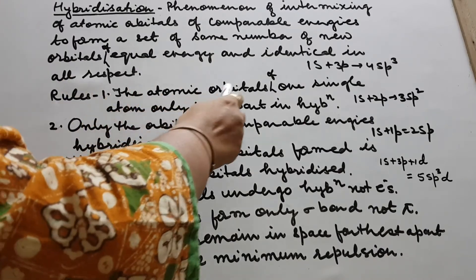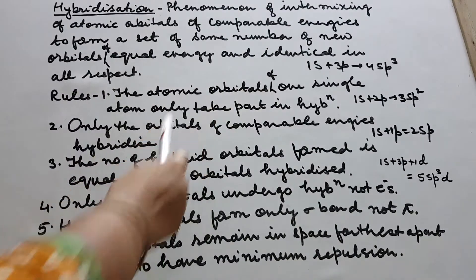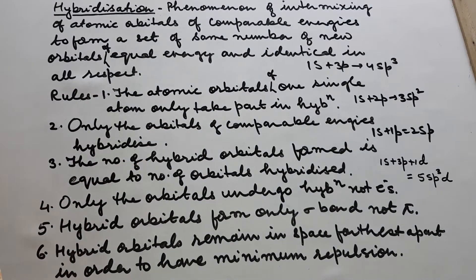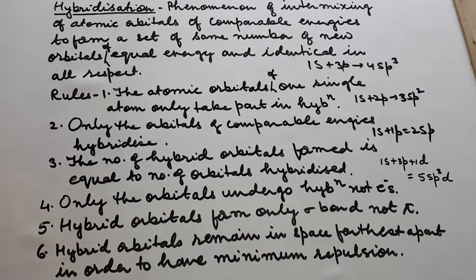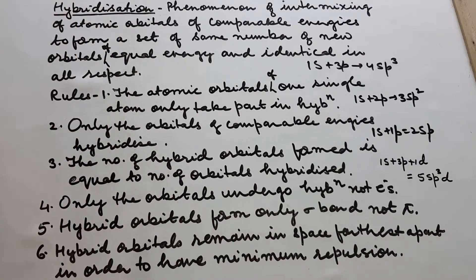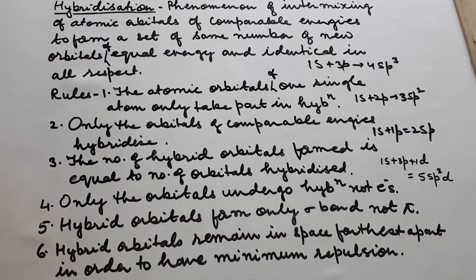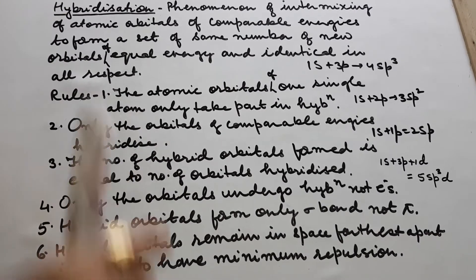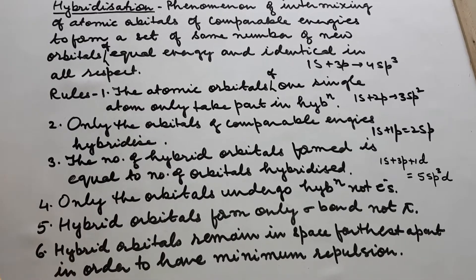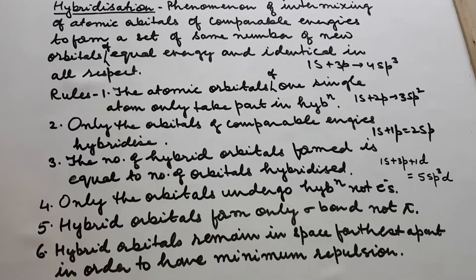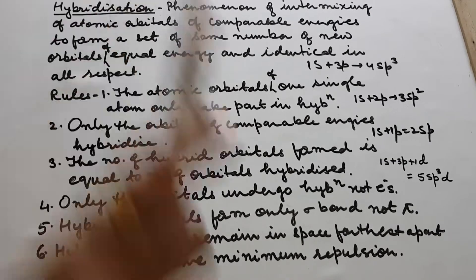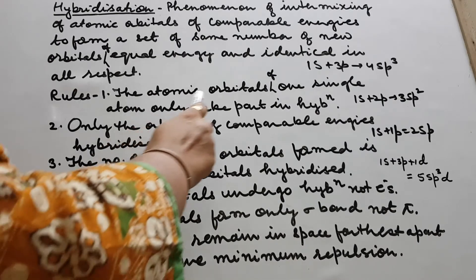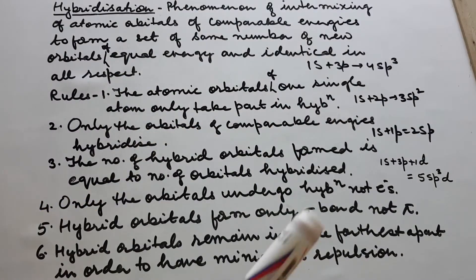The atomic orbitals of one single atom only take part in hybridization. In any molecule or any ion, it is only one atom whose orbitals take part in bond formation. And it is always the central atom whose orbitals take part in hybridization — the central atom.